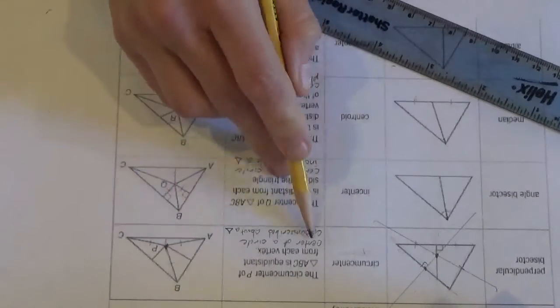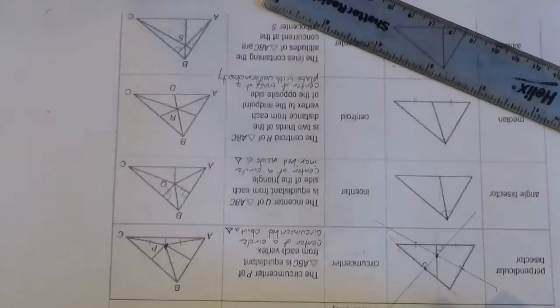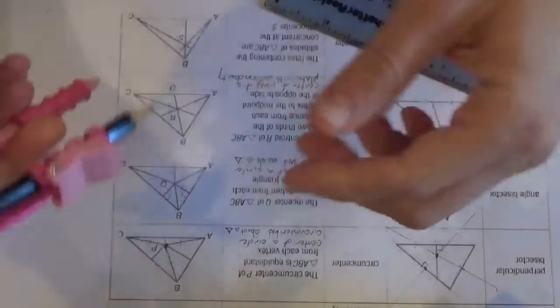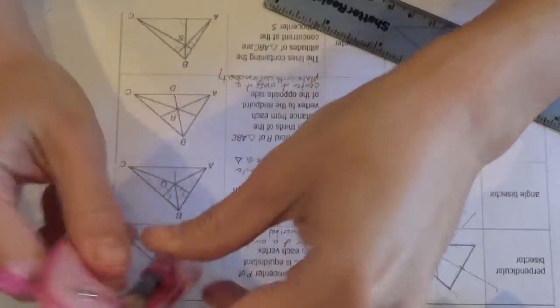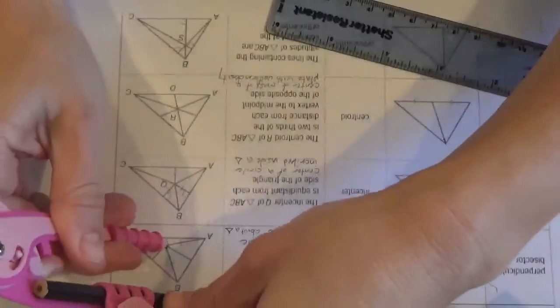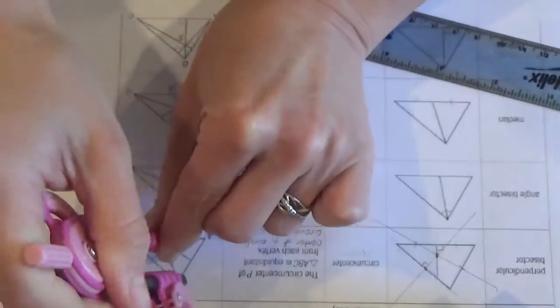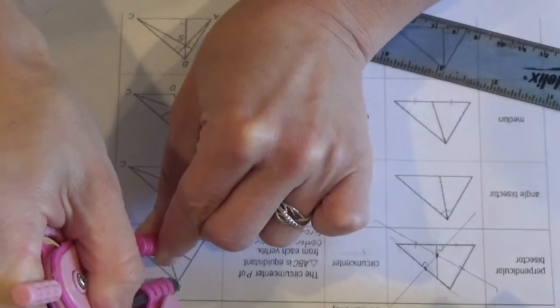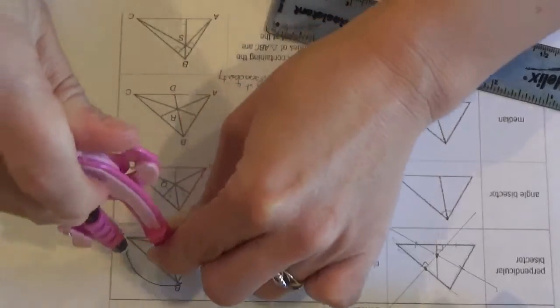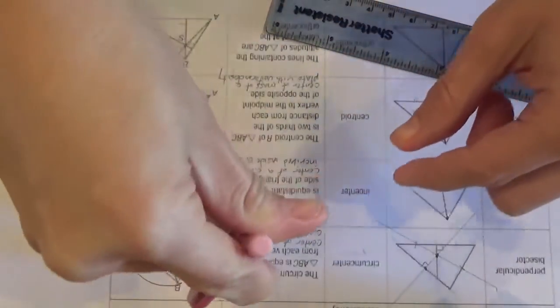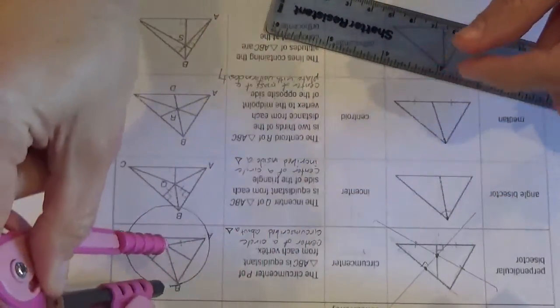And what makes that really cool, that they didn't write but I can fill in, is that it makes it the center of a circle that's circumscribed about the circle. So if that's my center, and the radius is one of those distances, I could draw a circle, if I can open this compass, that would hit every one of those vertices, and it would be awesome.